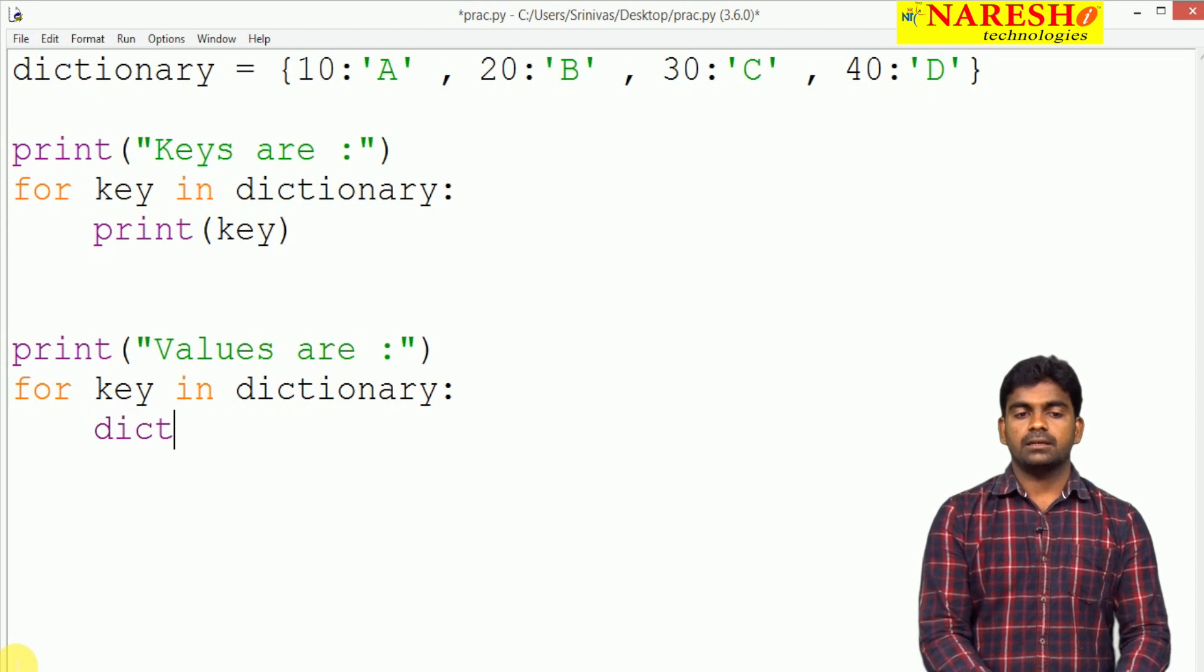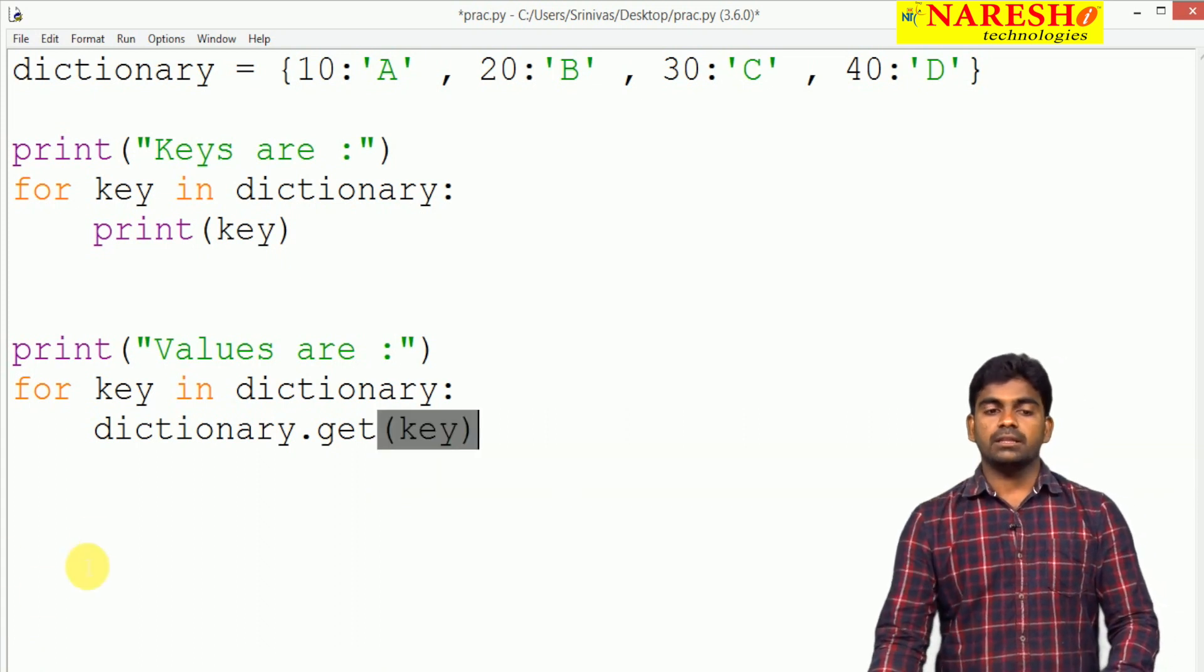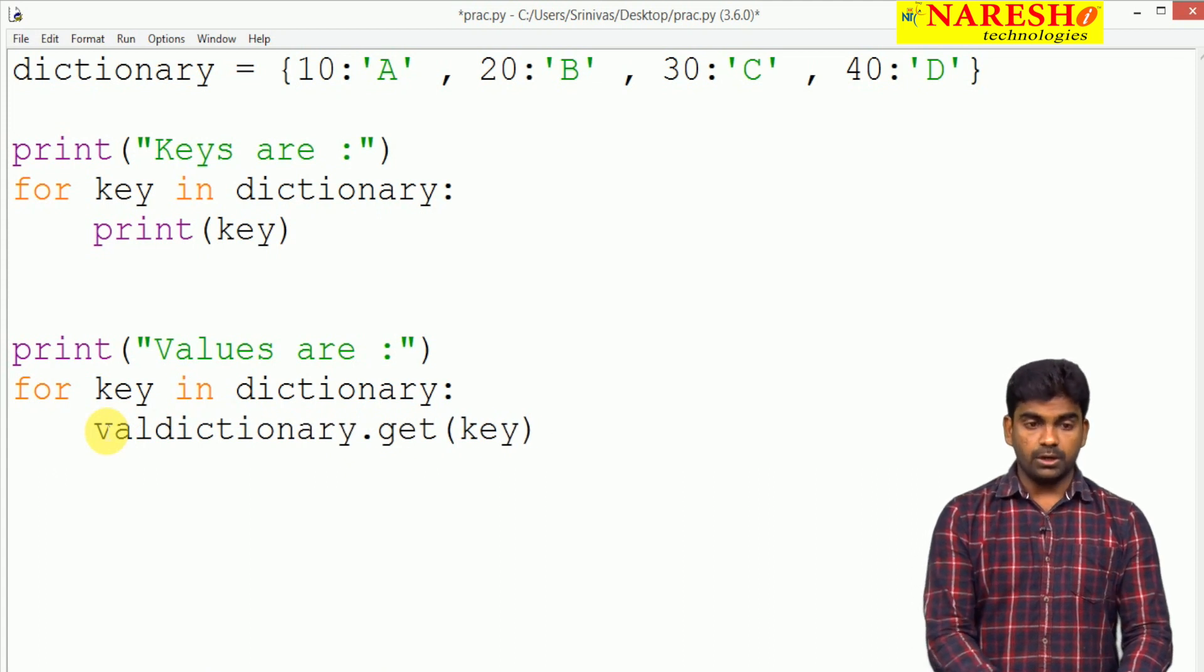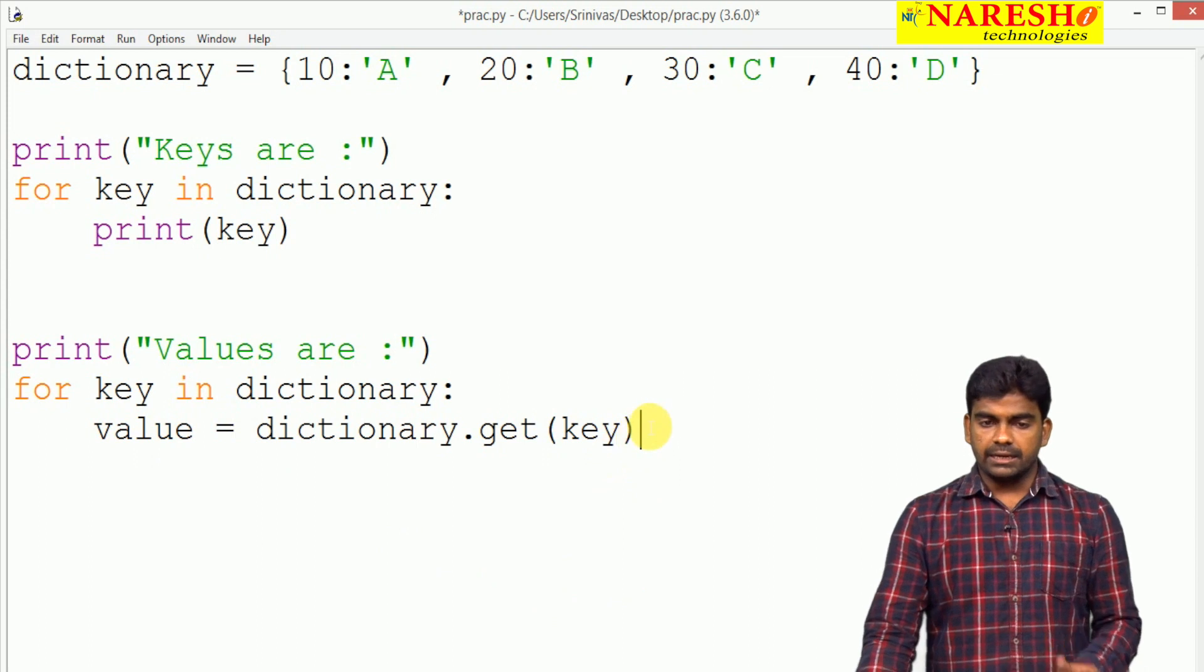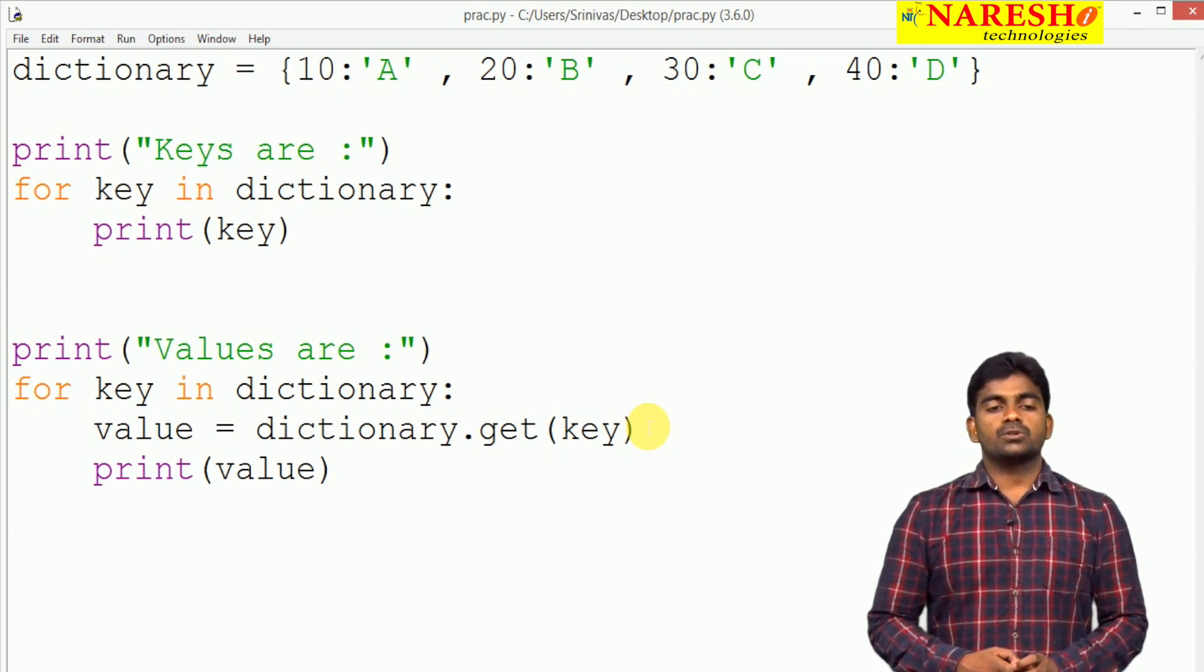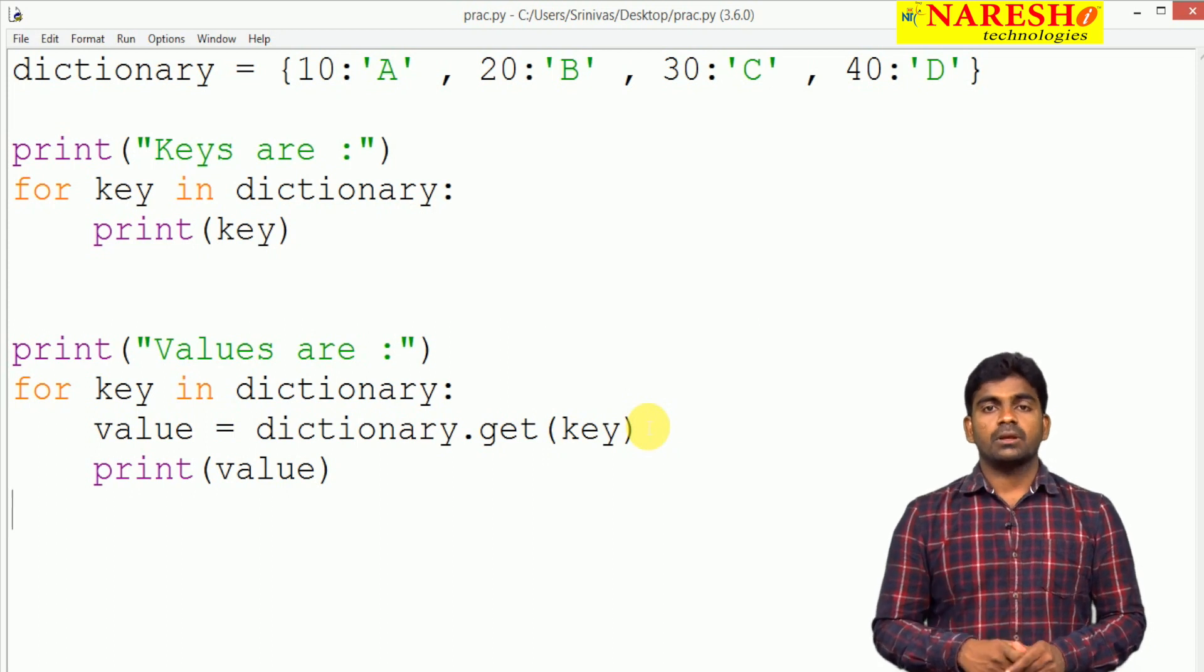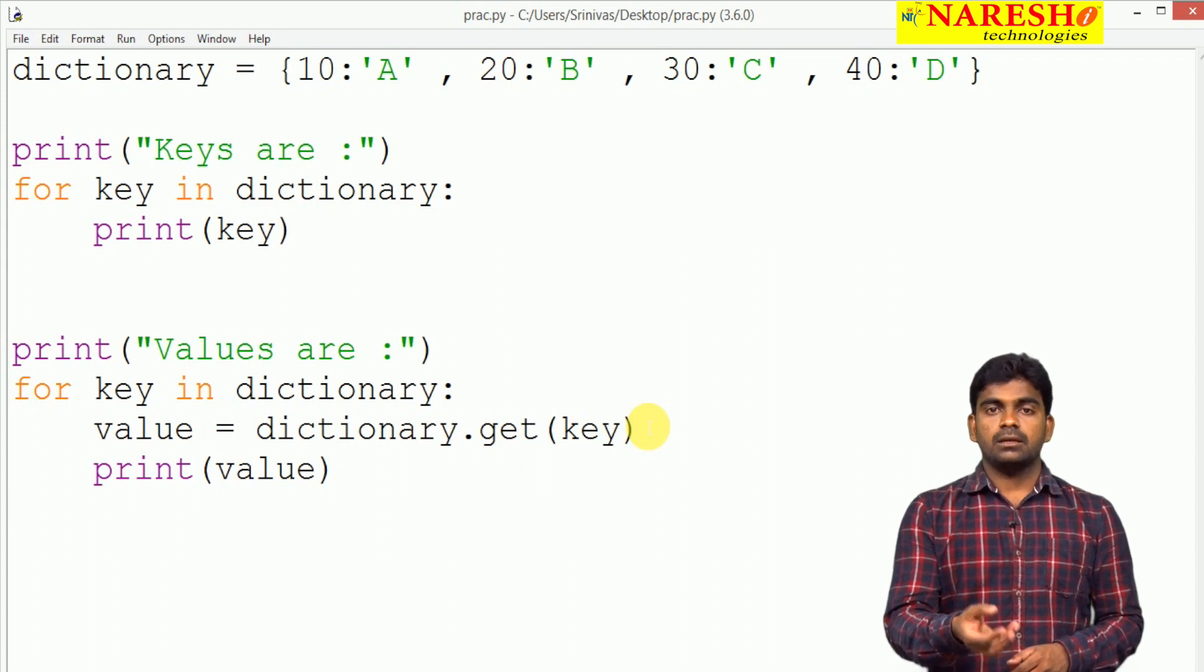First we should get the key, and with the help of key, get function we need to call. Dictionary object dot get, whenever we pass the key it will return the value. That we are collecting into a variable called value. Of course, directly you can display, but first we are collecting into a variable value and we are printing that value.